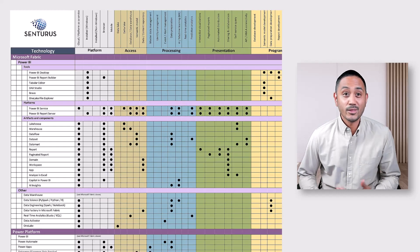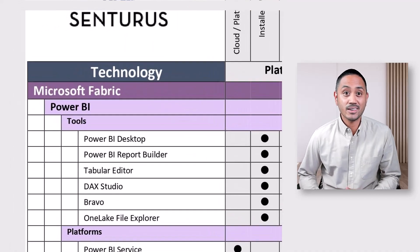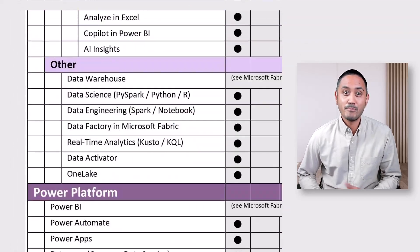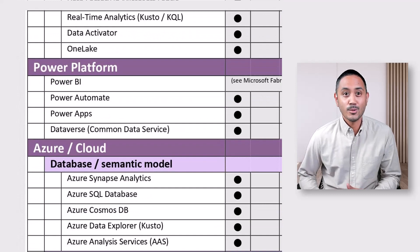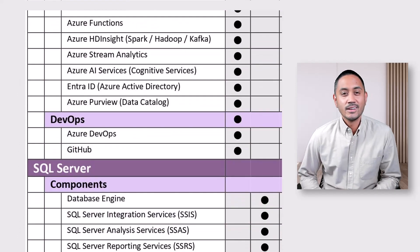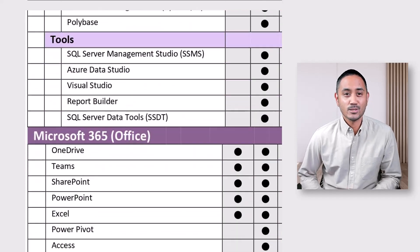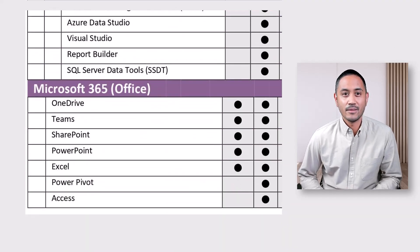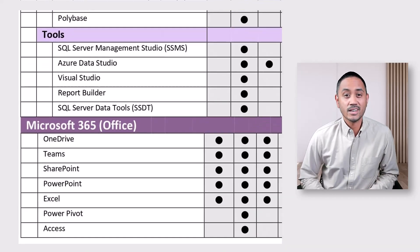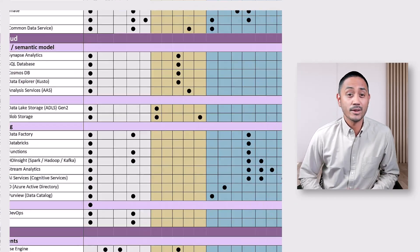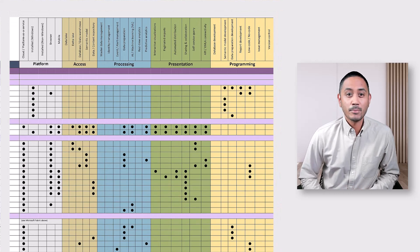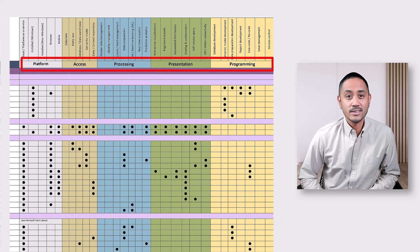Going down the list here, we have Fabric, Power Platform, Azure, SQL Server, and even Microsoft 365. From there, we take those technologies and break them up into five categories: Platform, Access, Processing, Presentation, and Programming.